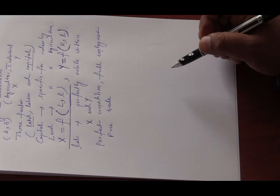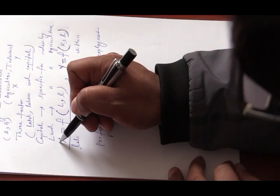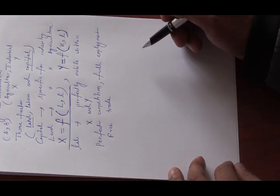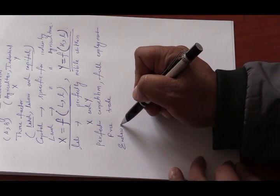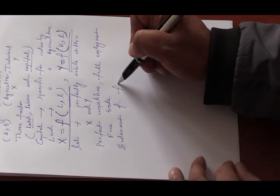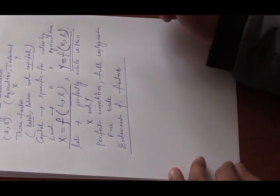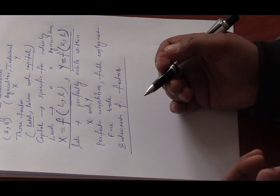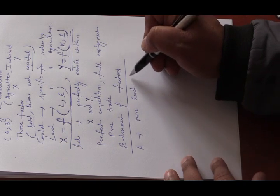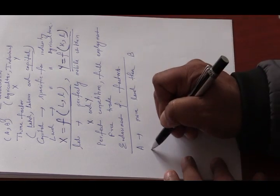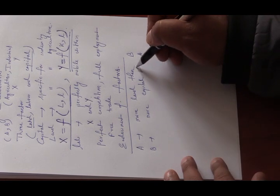There will be some divergence from HO theory at this point because here we cannot measure factor abundance in the same way. Instead, we consider the endowment of factors, which determines the production pattern in both countries. Country A has more land than B, and country B has more capital compared to country A.